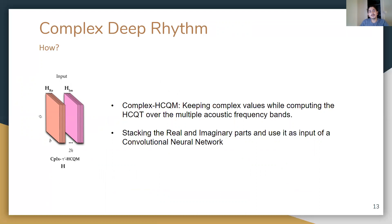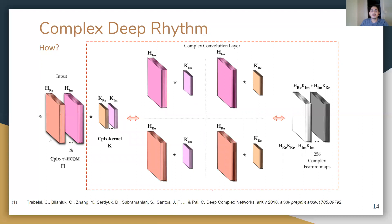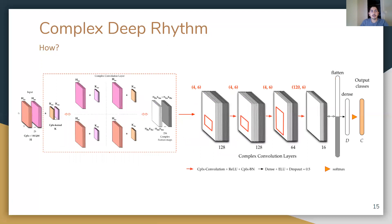To do so, we propose maintaining the phase information — and thus the temporal position information — of the rhythm component by keeping the complex values of the H-CQM instead of only the modulus. We then stack the real and imaginary parts of the representation and use it as input of a convolutional neural network. To perform complex convolution, we use the method described by Trabelsi: given the real-imaginary input representation, we convolve it with complex kernels, and the resulting filter maps have two parts — a real one and an imaginary one.